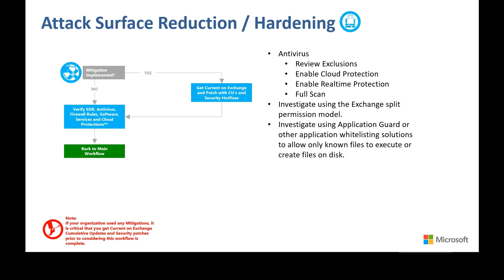Ensure your organization's antivirus exclusions are as locked down as they can be, paying attention to applying exclusions only to the systems that need them rather than all systems, and avoiding excluding whole directories or drives. Investigate such things as the Exchange split permission model to further reduce the attack surface of having an on-premise Exchange environment. Look at AppLocker, Application Guard, or other third-party whitelisting software to ensure that only known and approved applications or tasks are executing in the Exchange server environment.